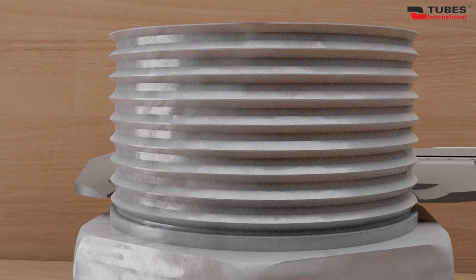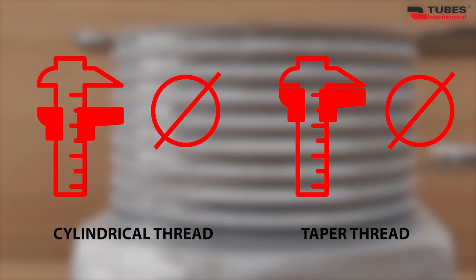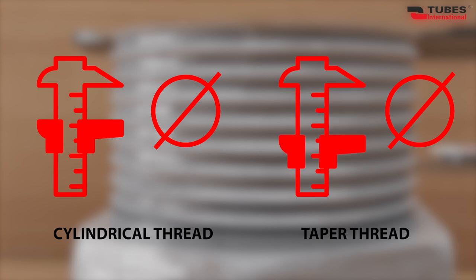The next step is to determine the type of thread. We do this by measuring the diameter on the outer side of the thread. If the thread has the same diameter throughout its length, it's a cylindrical thread. However, if the diameter tapers, we're dealing with a taper thread.